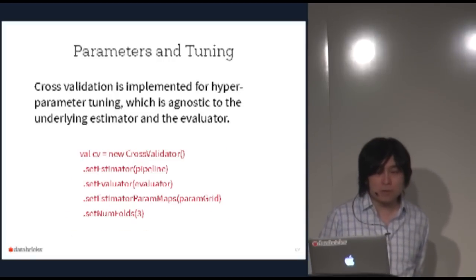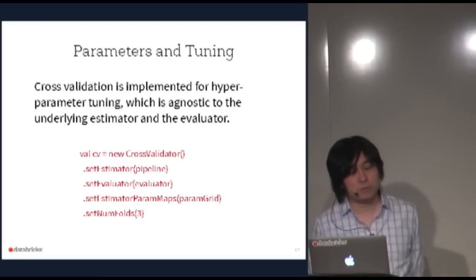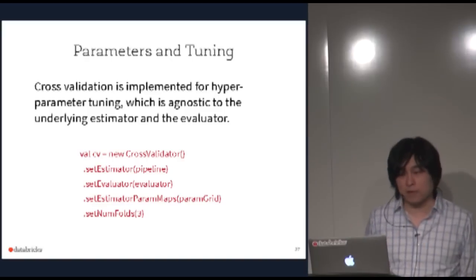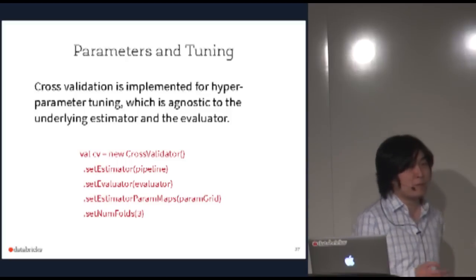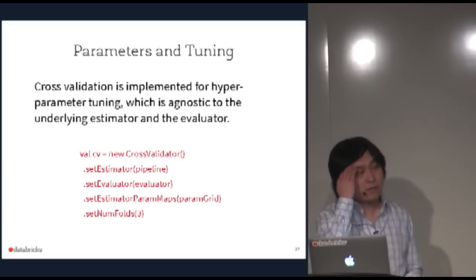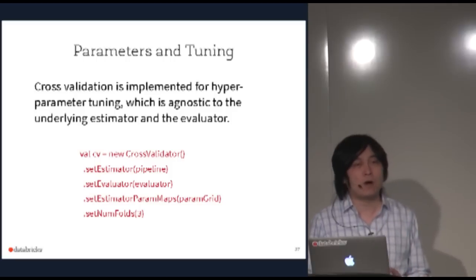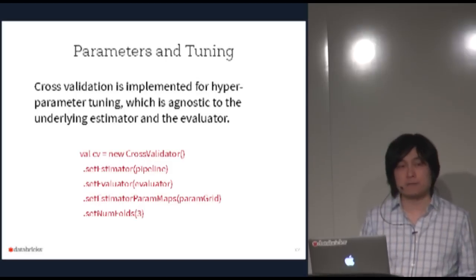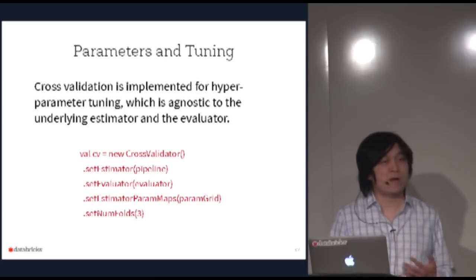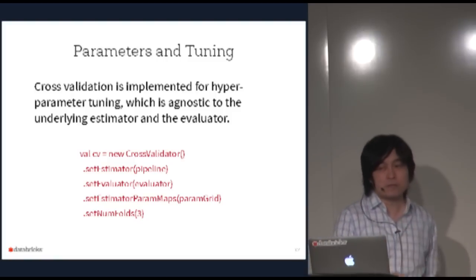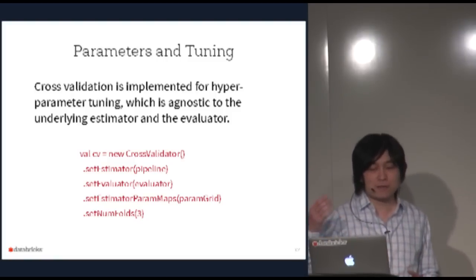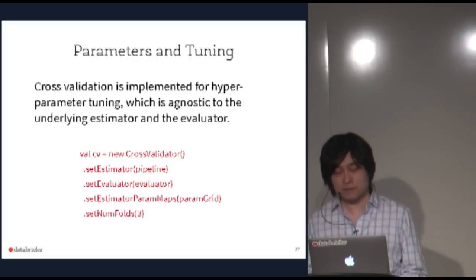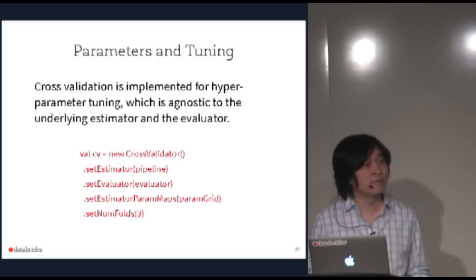For hyperparameter tuning, we implemented cross-validation that is agnostic to the underlying estimator and evaluator. Since a Pipeline is itself an Estimator, the cross-validator can tune an entire pipeline. You simply specify the pipeline, the evaluator, the parameter grid, and the number of folds, and run it. That's how easy it is.